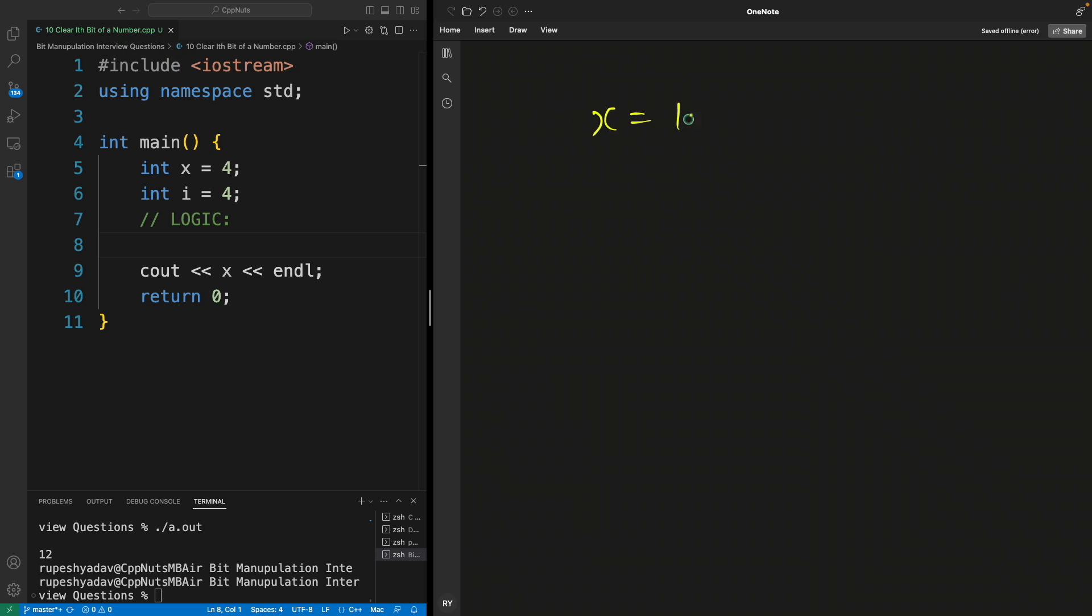If x equals 10, the binary representation is 1010. This is the binary representation of decimal 10. Now if I tell you to clear a bit - this is the fourth bit, right? This is first, second, third, and fourth. So if I ask you to clear this fourth bit, or to clear